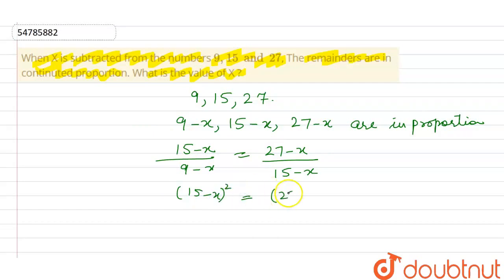So 15 minus x ka whole square ho gya, 27 minus x, 9 minus x. Yee kitna aajayega? 225 plus x square minus 30x. Aur yee ho jayega aapka, sorry, 243 minus 27x minus 9x. Kitna aajayega? 27 or 9 ko add karenghe, it will be 36x plus x square.